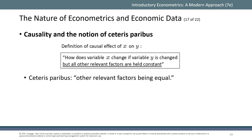Counterfactual outcomes do not exist in the real world because of the problem of observing a person in only one state. The solution is to assume ceteris paribus — that is, all other factors being equal. In the drug efficacy example, we find two individuals who are identical in all other aspects, give the drug to one and not to the other, and at the end of the trial observe the difference in their health to determine whether the drug was effective.